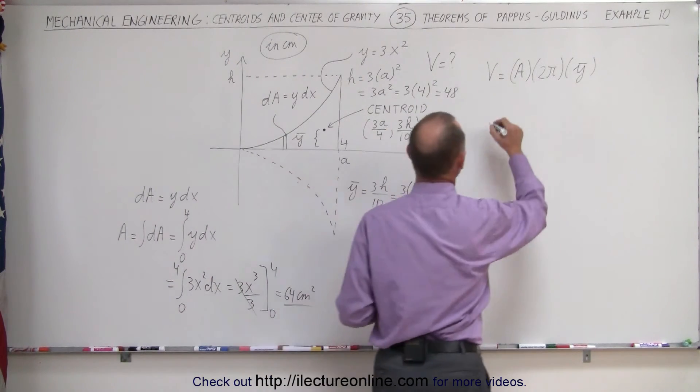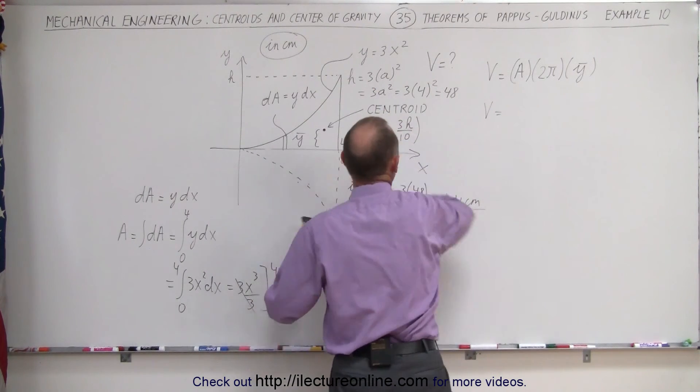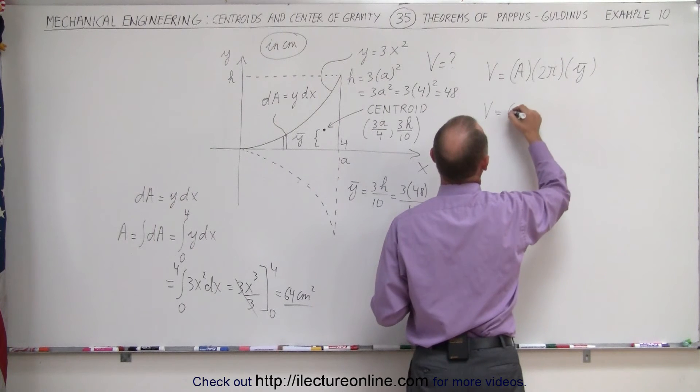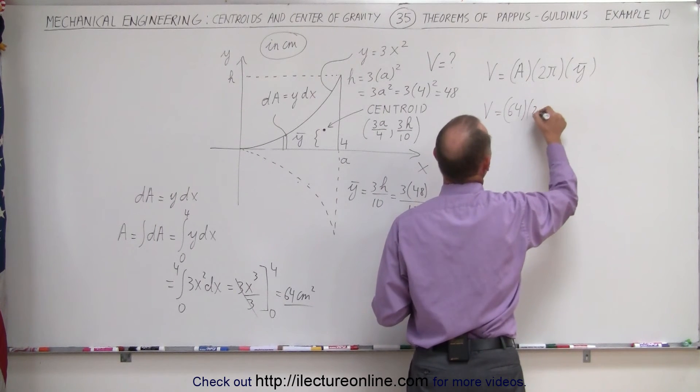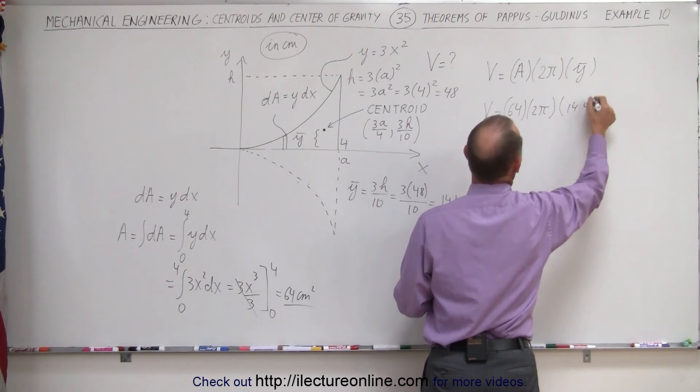Finally, we can find the volume created by taking this parabolic shape and revolving around the x-axis. Area is 64 times 2π times the height we set was 14.4.